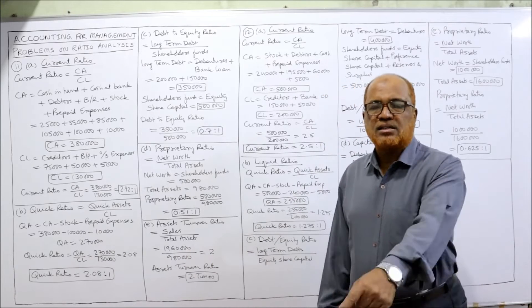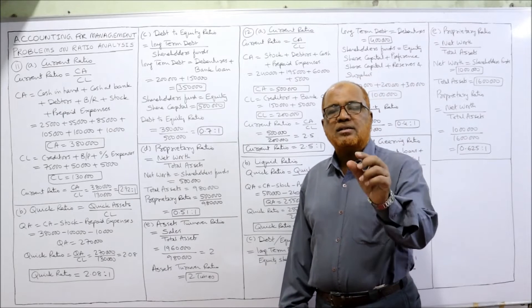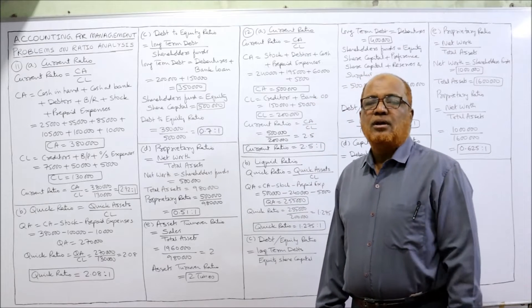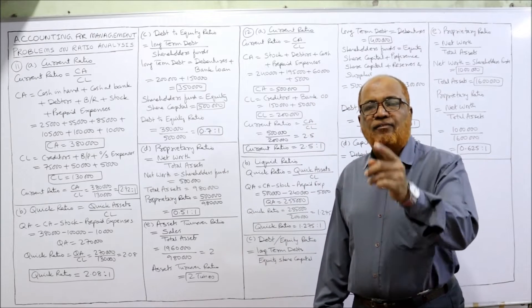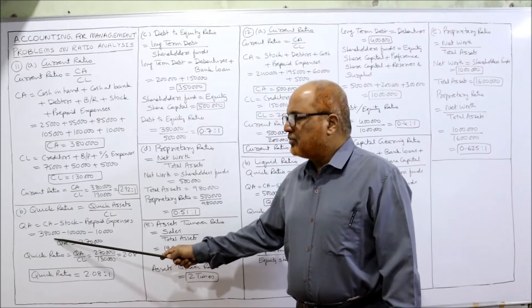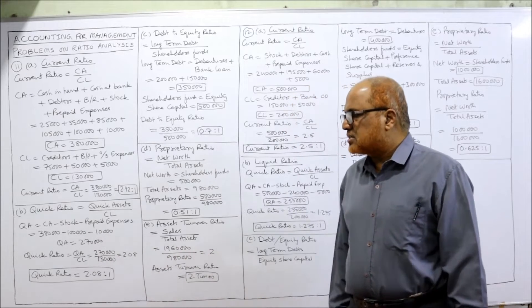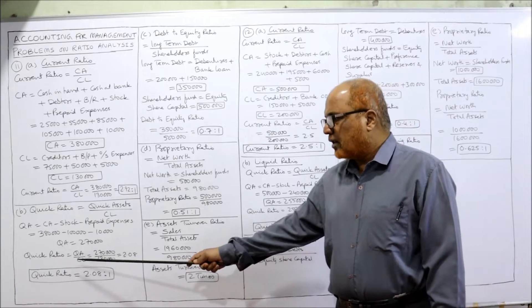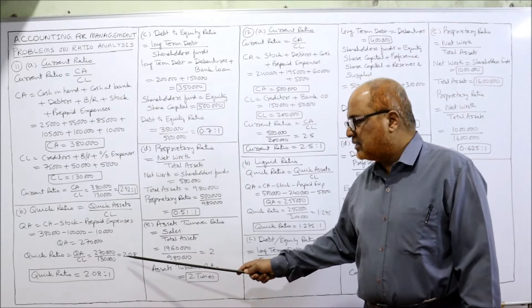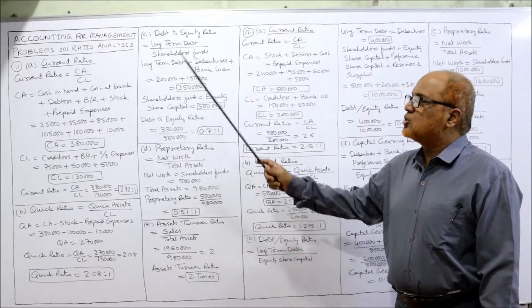Next ratio: quick ratio. Quick assets divided by current liabilities. Quick assets equals current assets minus stock minus prepaid expenses — those two items must be deducted. Current assets are 3 lakh 80,000, minus stock 1 lakh, minus prepaid expense 10,000, so quick assets are 2 lakh 70,000. Quick ratio: 2 lakh 70,000 divided by 1 lakh 30,000 equals 2.08 is to 1. That is the quick ratio.